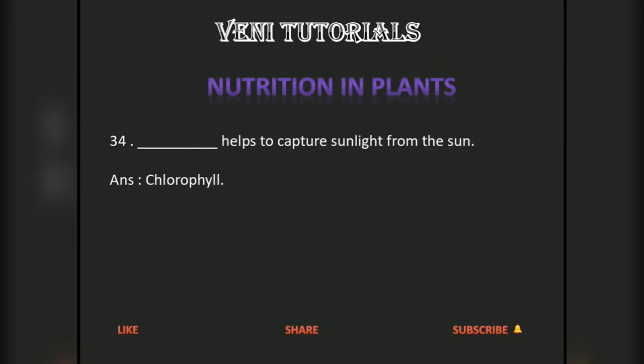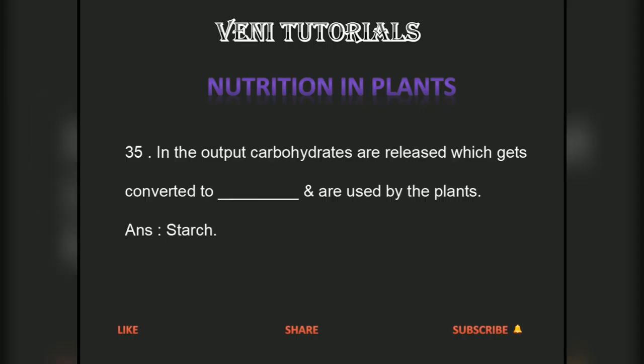Chlorophyll helps to capture sunlight from the sun. In the output, carbohydrates are released which get converted to starch and are used by the plants.